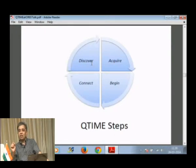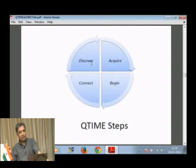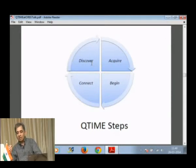So to learn in Queue Time — or learn in the quadrants of this time, which is Trust, Innovation, Methods and Efforts — you need only 4 steps like the scrabble game: Acquire, Begin, Connect and Discover. Whenever you are thinking about Queue Time learning, think scrabble game and think the steps you have to go through, and then start learning in every dimension of Queue Time.